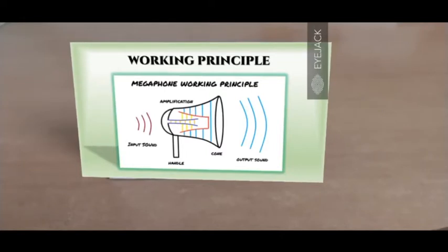Sound reflects back and forth inside the megaphone and after multiple reflections the amplitude increases to a great extent, which is why the sound heard outside the megaphone is pretty loud compared to the input sound.